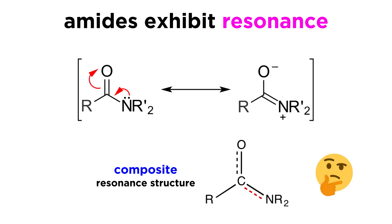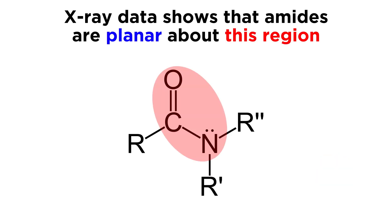This is not limited to conjecture with Lewis dot structures. There is actually very strong empirical evidence for this fact in the way of X-ray data, which invariably shows that amides are planar about this region, just like alkenes, which is indicative of the strong double bond character.